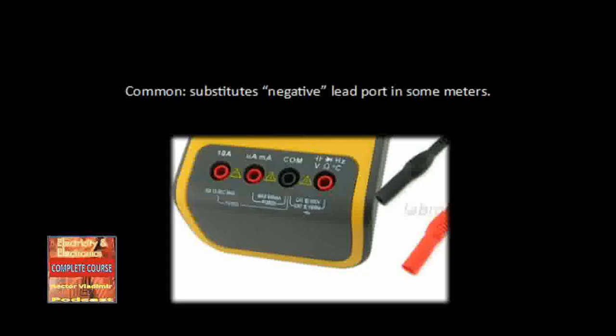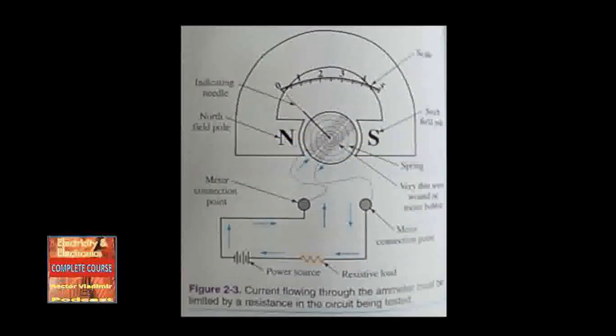The meter rotates inside the permanent magnet field. If proper polarity is not used, the coil will deflect in the opposite direction. At the very least, the needle will not deflect and there will appear to be no reading. At worst, it could possibly damage the meter. Some meters have circuit protection built in to protect the meter movement from damage caused by improper connections. Current flowing through the amp meter must be limited by a resistance in the circuit being tested.